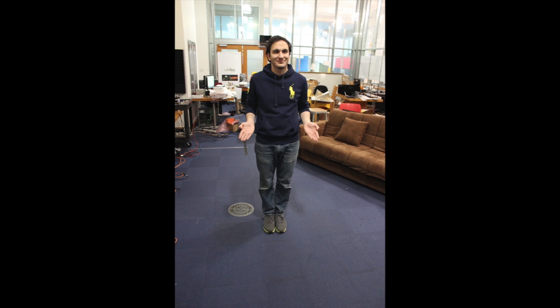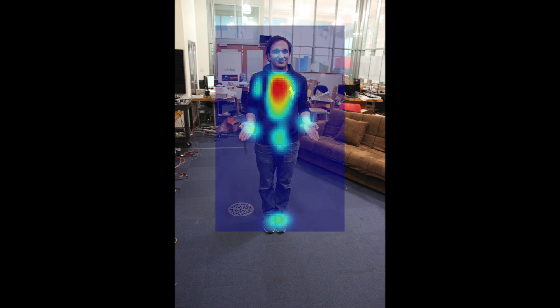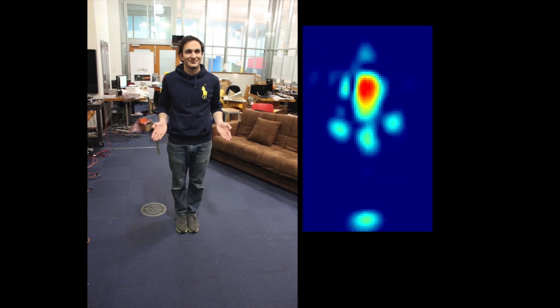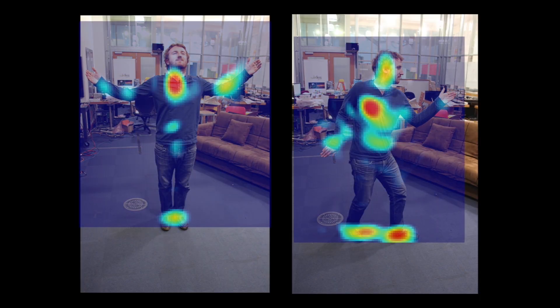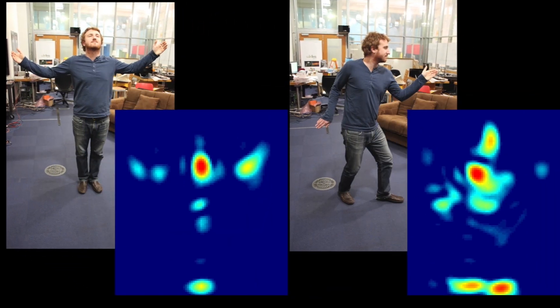The device can also distinguish between certain human postures. If the person stands straight, the output looks like this. While when someone stands in other postures, the device's output reflects his postures.